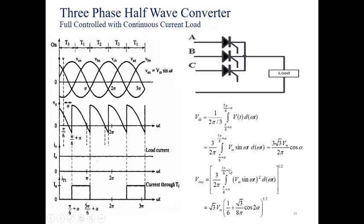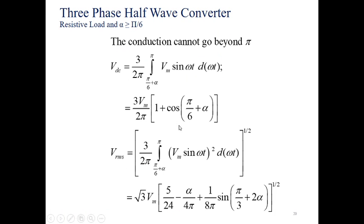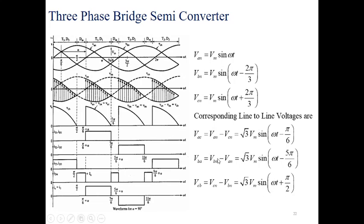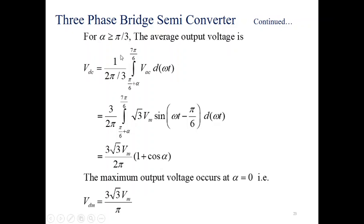It is very clear — you can find the output voltage here. V_dc is given by this expression, and V_rms is this much. For the semi-converter, a diode is connected here. The output voltage V_dc equals three root three V upon two pi, multiplied by (1 + cos alpha).